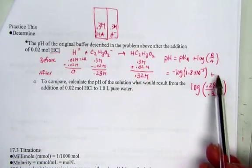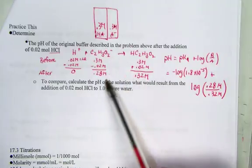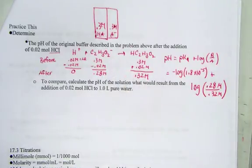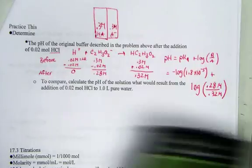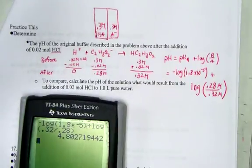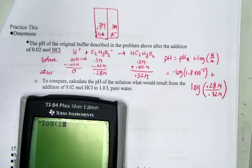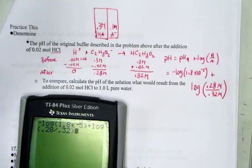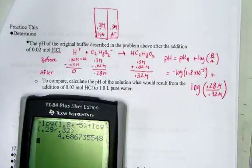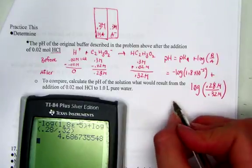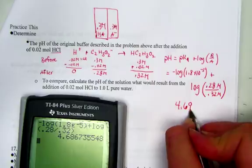pKa plus the log of the ratio of base over acid. The base this time was a reactant. Let's calculate the pH of this solution. Negative log of 1.8 e negative 5, plus the log of the ratio of 0.28 over 0.32. And we get a value 4.69, 4.69 pH units.